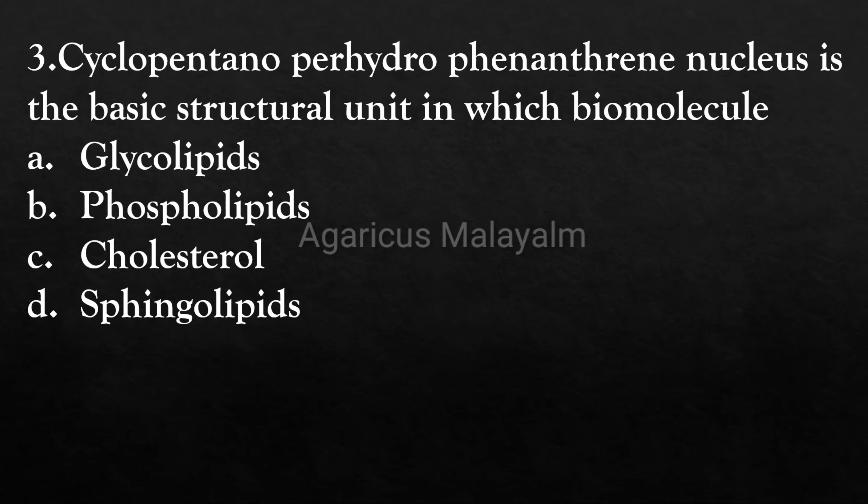Third question: Cyclopentano-perhydrophenanthrene nucleus is the basic structural unit in which biomolecule? Answer options: Option A - glycolipid, Option B - phospholipids, Option C - cholesterol, Option D - sphingolipids. Correct answer: Option C - cholesterol.